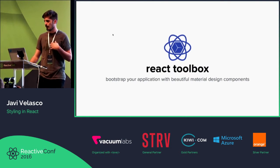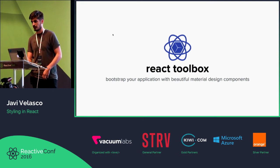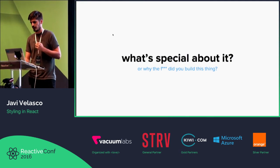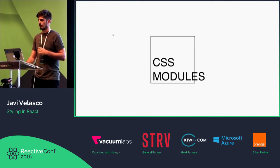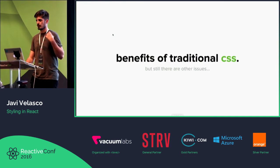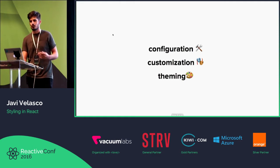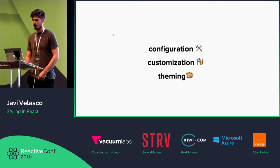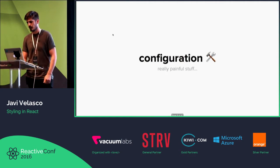I am also the author of a library called React Toolbox. React Toolbox is a library of material design components, but what makes it a little special is that we are actually using CSS modules to style the components. So you're getting the benefits of traditional CSS, but also you are getting some issues that come with CSS modules — like configuration, customization, and demoing.